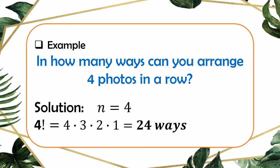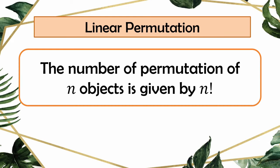Let's have this example: in how many ways can you arrange 4 photos in a row? Say you want to make a photo gallery at home. Our N is 4 because there are 4 photos to arrange. For this problem, we use N factorial. So 4 factorial equals 4 times 3 times 2 times 1, and the product is 24 ways. This type of problem is called linear permutation. The number of permutations of N objects is given by N factorial, and we no longer need R.